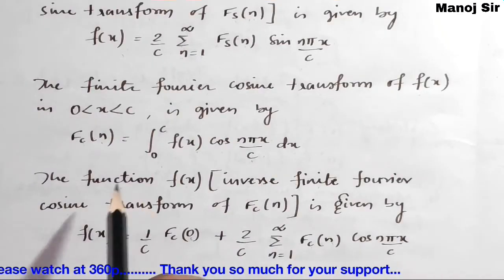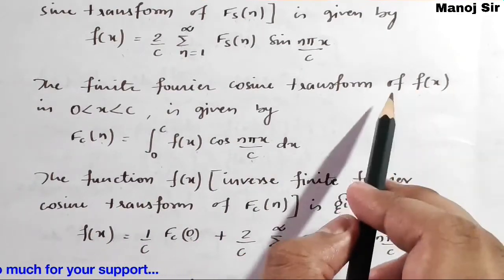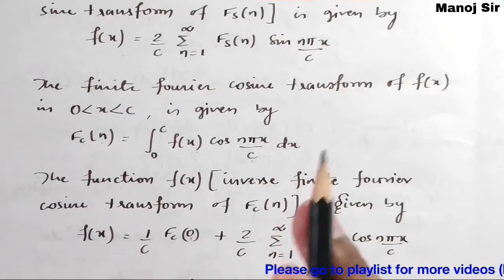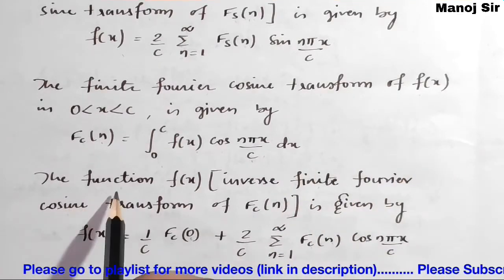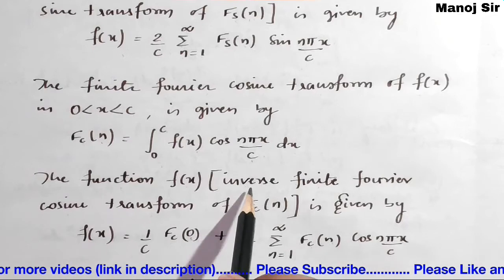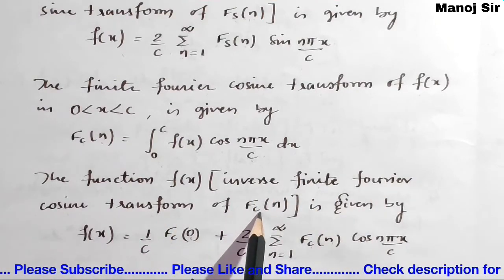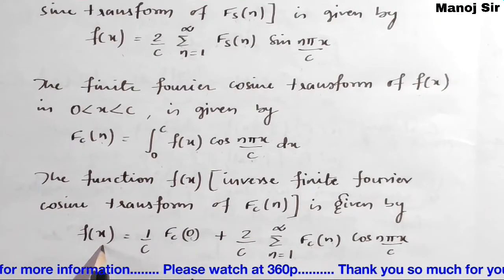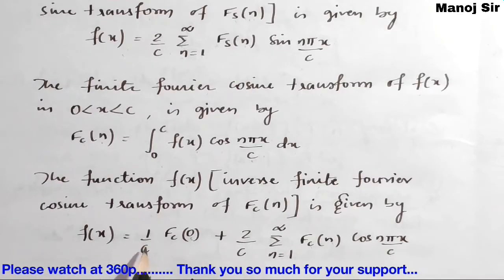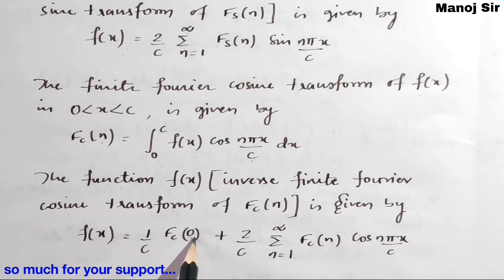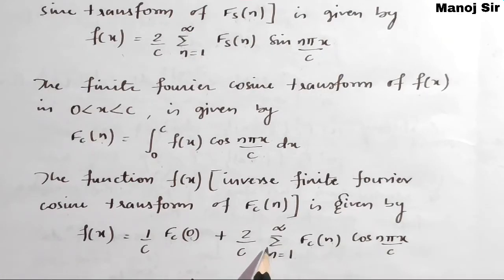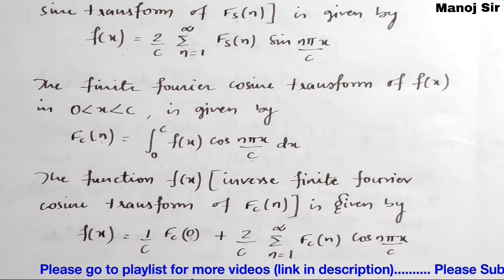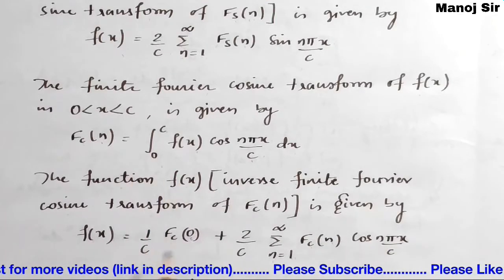If Fc(n) is given and you want to find f(x), we use the inverse finite Fourier cosine transform: f(x) equals (1/c) into Fc(0) plus (2/c) summation n equals 1 to infinity of Fc(n) into cos(nπx/c). You need to remember both these results — they are very important.